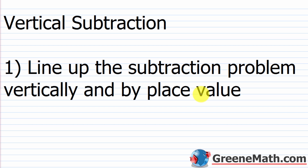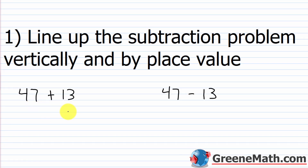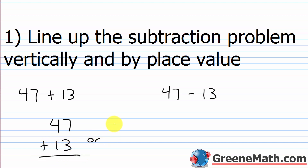You'll recall with vertical addition, it's the same first step. Let's say we have 47 plus 13 for the addition problem, and 47 minus 13 for the subtraction problem. With addition, addition is commutative, so the order that we add in does not matter. When I stack these numbers on top of each other, it doesn't matter what I put on the bottom and what I put on the top. So I can do 47 plus 13, or I could do 13 plus 47 — either way, I'm going to get the same answer. So 7 plus 3 is 10, we carry the 1, then 1 plus 4 is 5, and 5 plus 1 is 6, giving us 60.